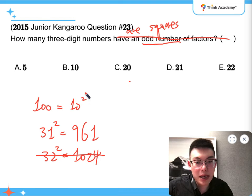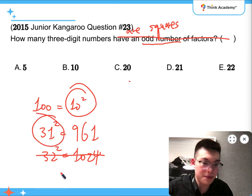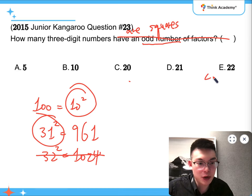Which means how many three-digit numbers are there? How many numbers are there from 10 to 31? So 31 take away 10, adding 1, that's 22. So the answer is E.